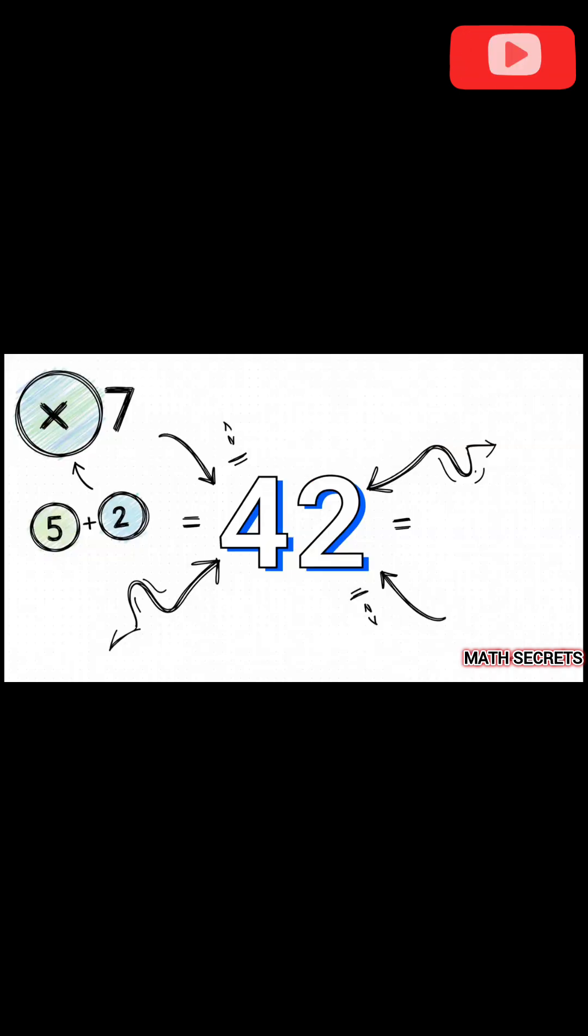And for the final step, we just add them together. 30 plus 12 is, of course, 42. And just like that, you've solved 7×6 without ever having to actually multiply by seven. It's almost effortless.